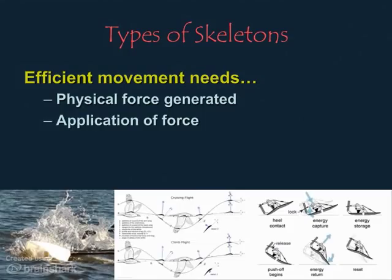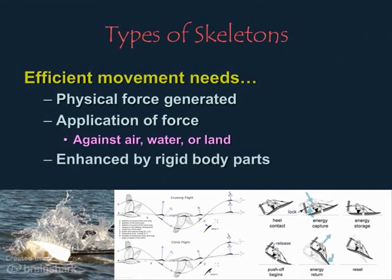They must generate physical force, and that force must be applied against air, water, or land in order to push or pull themselves around. While invertebrates can move with ease, the ability to move efficiently is greatly enhanced by rigid body parts. Legs push against the ground, wings push against the air, and flippers or fins push against the water, as you see in the three diagrams here.